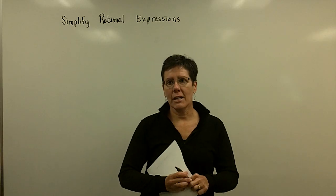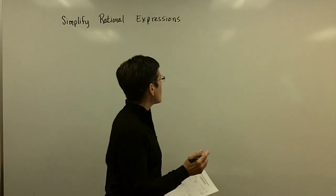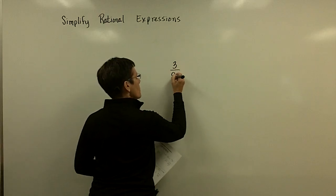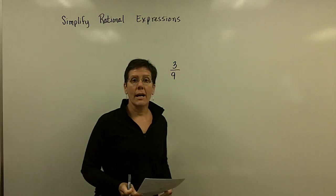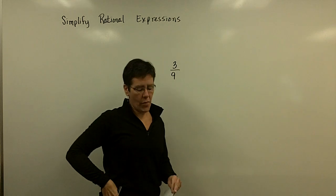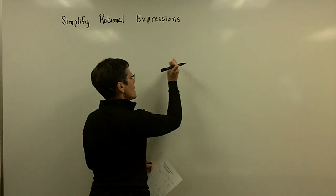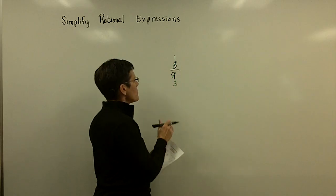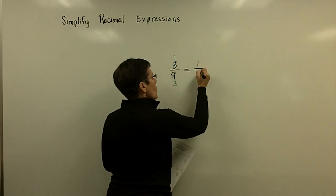Before we actually simplify an algebraic fraction, let's talk about a simple fraction that you're comfortable with. The fraction 3 ninths reduces to 1 third. And that's because we say 3 goes into here once and 3 goes into there 3 times. And so we're left with 1 third.